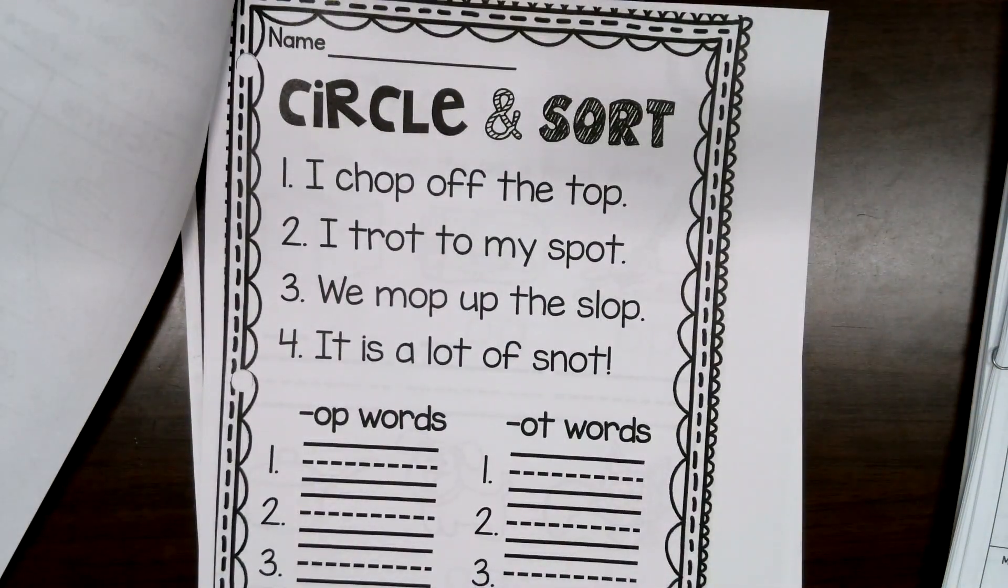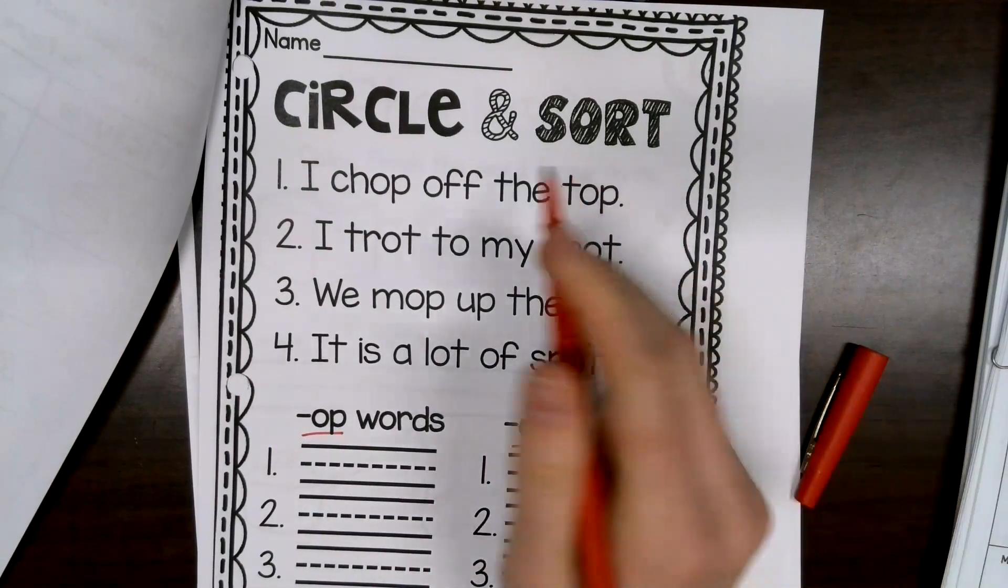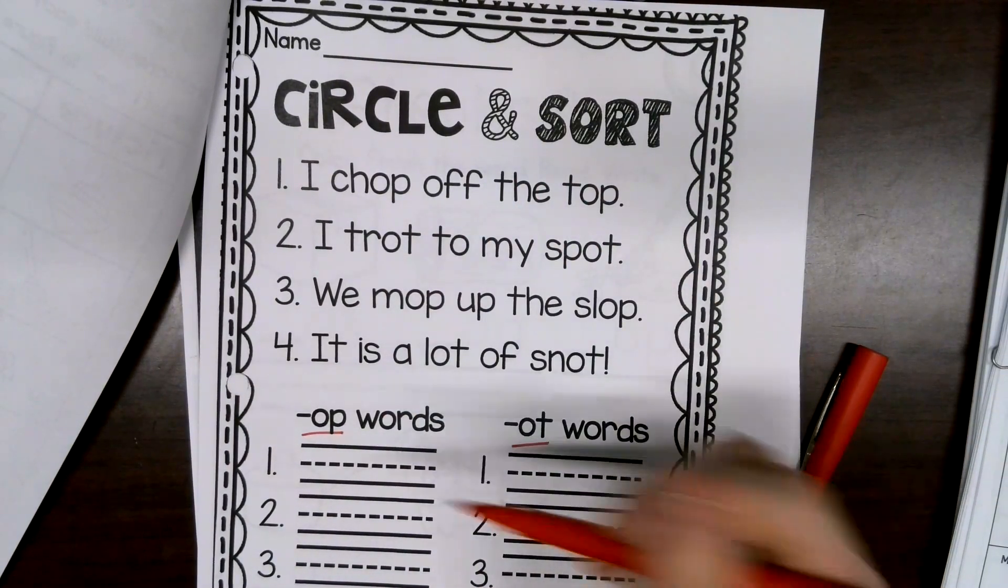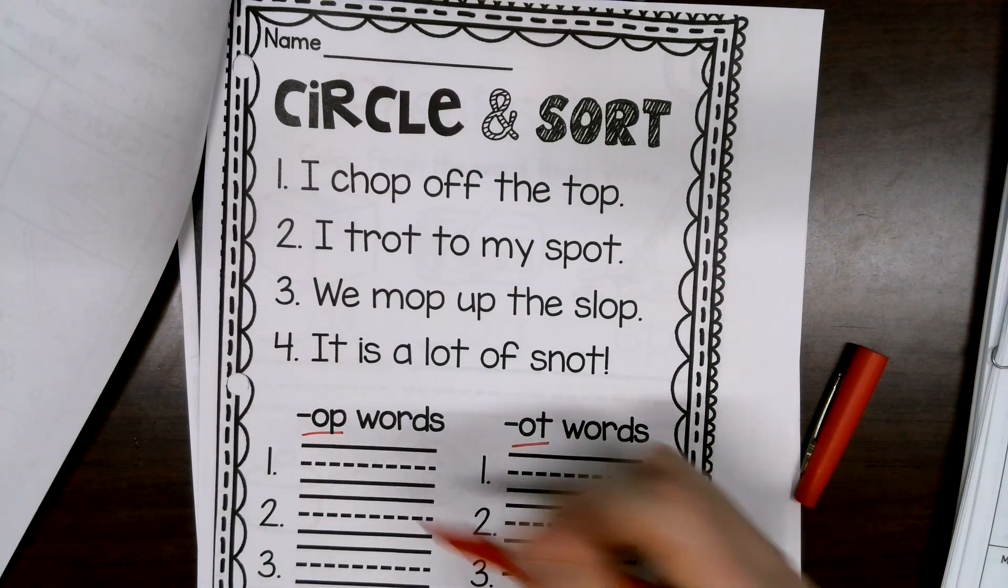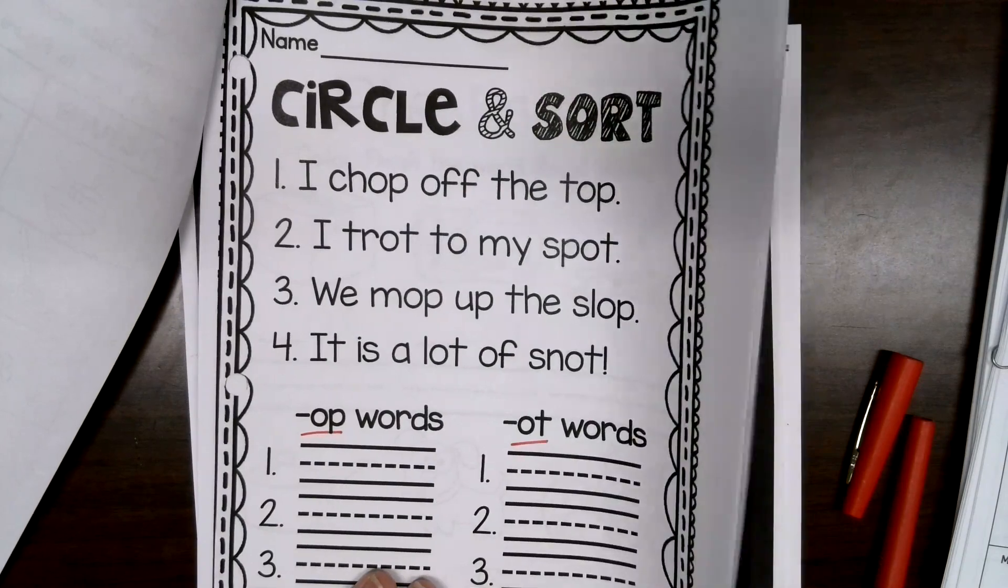Circle and sort. This is the easiest one ever. You're looking for those O-P and O-T words. Circle them in your sentences and write them on the spot. Pause here, do it, hit play when you're ready to move on.